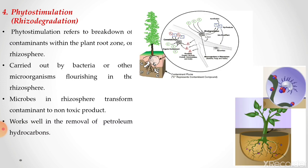Phytostimulation, also called rhizodegradation, refers to the breakdown of contaminants within the plant root zone or rhizosphere, carried out by bacteria or other microorganisms flourishing in the rhizosphere. Microbes in the rhizosphere transform the contaminant to non-toxic products and work well in removal of petroleum hydrocarbons. The microorganisms growing around the roots take up contaminants, decompose them to non-toxic products, and thereby treat the wastewater.